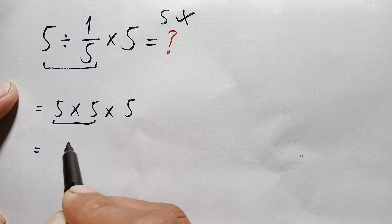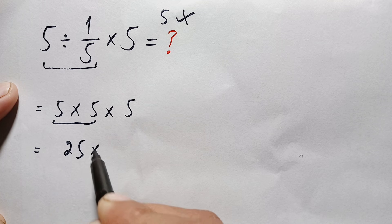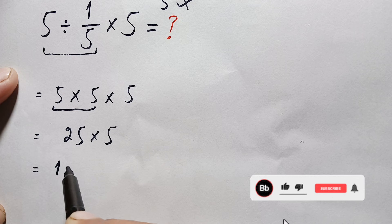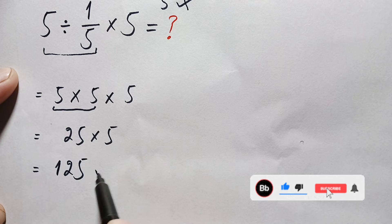5 times 5 is 25, times 5. Finally, 25 times 5 is simply 125, and that is our answer.